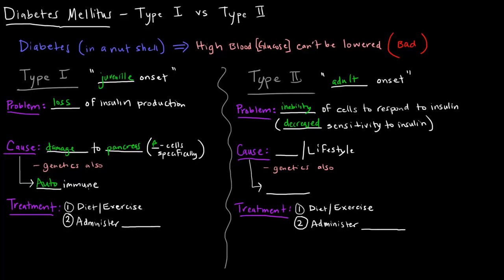This typically happens when individuals are pretty young, hence the term juvenile onset. Usually people are born with type 1 diabetes or are diagnosed pretty early in their lives. Whereas type 2 diabetes is called adult onset because generally speaking, diet and lifestyle have to do with acquiring it — and genetics play a role as well. Diets high in sugar, fat, and cholesterol lead to type 2 diabetes, and individuals who are obese are typically more susceptible.